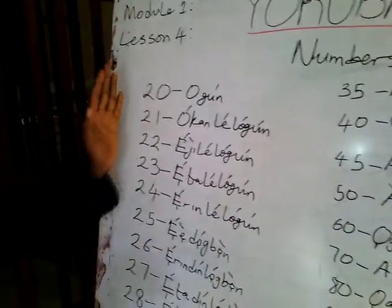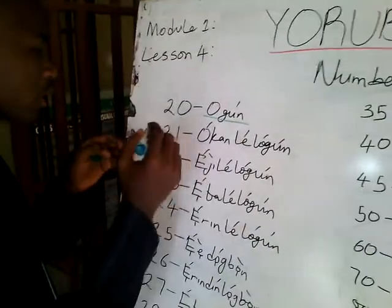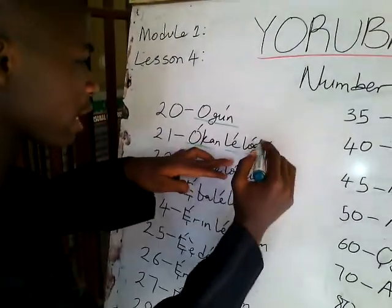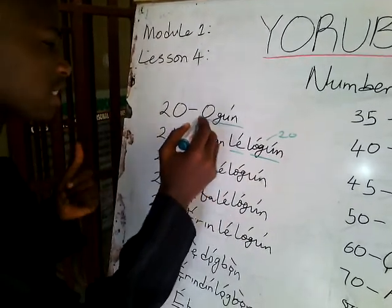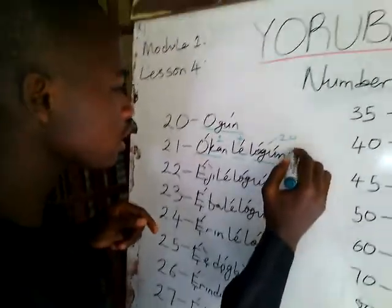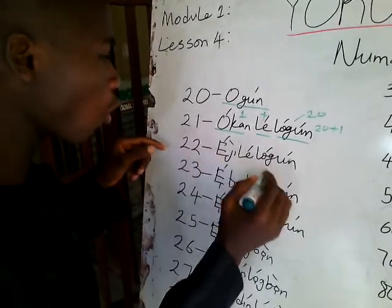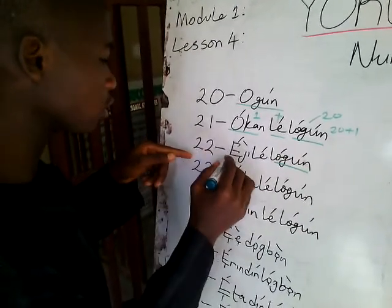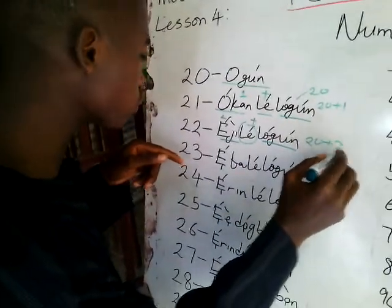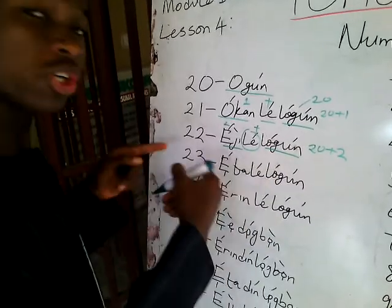Let me explain how we arrived at these in Yoruba language. For 20, we know that 20 is Ogun. So 21 is Okon Lelogun — the Ogun here is 20, and Okon from our previous class is 1. Lel means plus, that is, it increases. So we have 20 plus 1 to give us 21. Similarly, 22 has Ogun as 20 and Eji as 2, and Lel is plus, so 20 plus 2 gives us 22. For 23, Eta is 3 and Ogun is 20, so 20 plus 3 gives us 23.